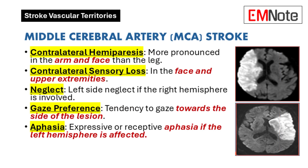Now let's shift to the middle cerebral artery. If it's the arm that's more affected than the leg, we're probably dealing with a middle cerebral artery stroke. Facial weakness and sensory loss on the same side of the body are also common. If the stroke affects the left side of the brain — the dominant hemisphere for language in most people — you might see aphasia, which can manifest as difficulty speaking or understanding speech.